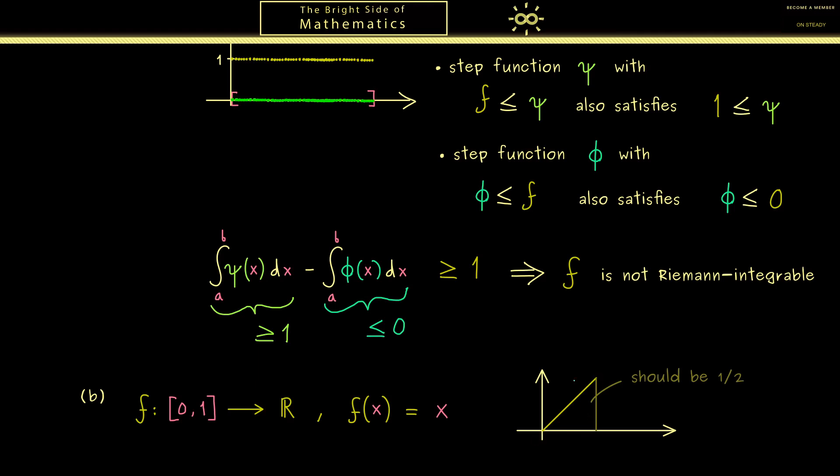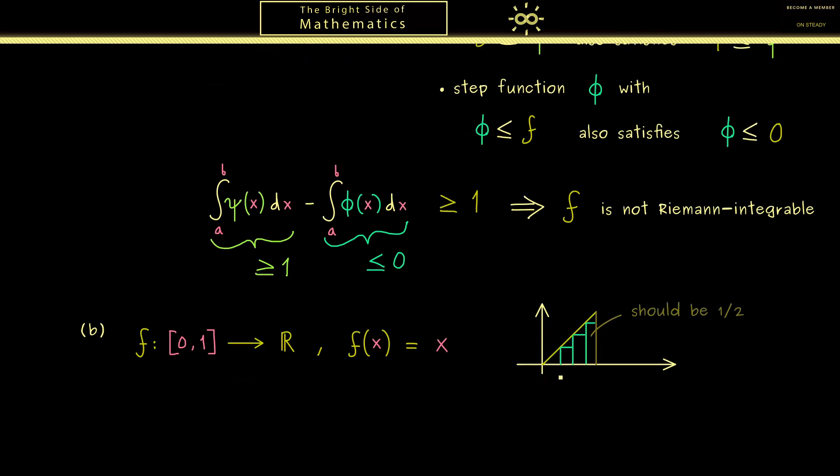It's simply half of the square where we have the sides as 1 and 1. However if we work with the definition of the Riemann integral what we need to we can't use the triangle we need to use rectangles. Hence here we can actually see if our approximation works. Now the question here is what is a good step function we can choose here.